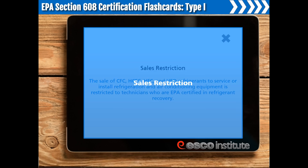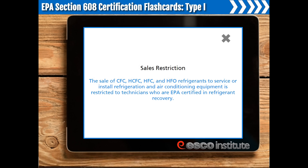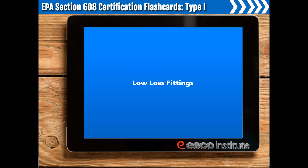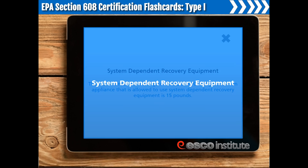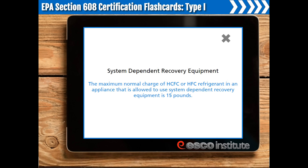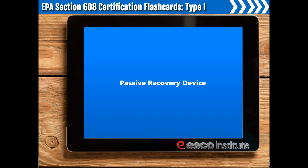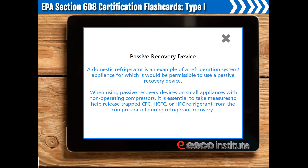Sales restriction. The sale of CFC, HCFC, HFC, and HFO refrigerants to service or install refrigeration and air conditioning equipment is restricted to technicians who are EPA-certified in refrigerant recovery. Low-loss fittings. Recovery devices used to recover CFC, HCFCs, and HFCs should contain low-loss fittings that can be either manually or automatically closed when disconnected to prevent loss of refrigerant from hoses. System-dependent recovery equipment. The maximum normal charge of HCFC or HFC refrigerant in an appliance allowed to use system-dependent recovery equipment is 15 pounds. Passive recovery device. A domestic refrigerator is an example of a refrigeration appliance for which it would be permissible to use a passive recovery device.